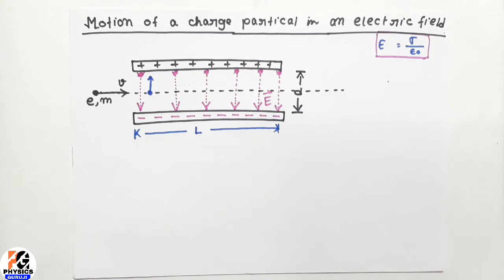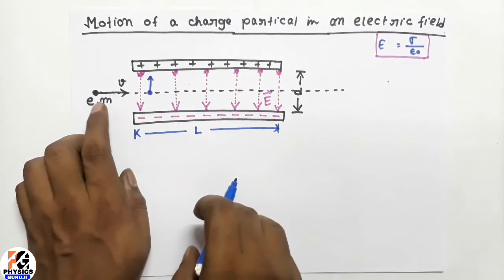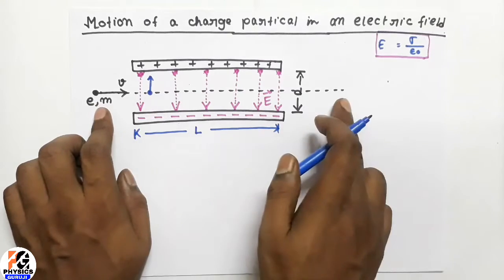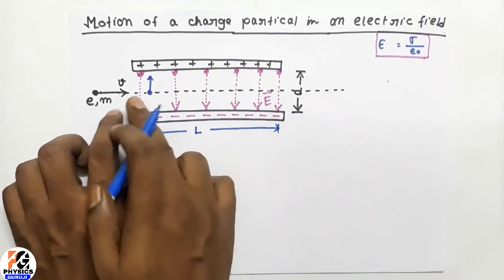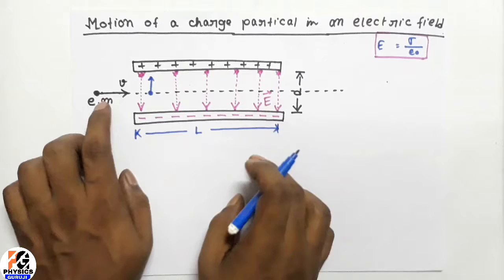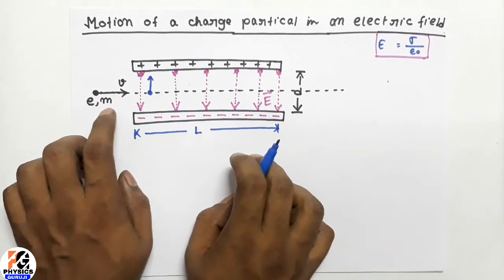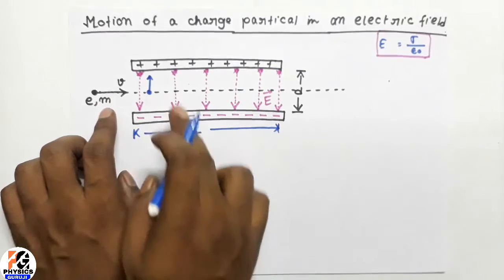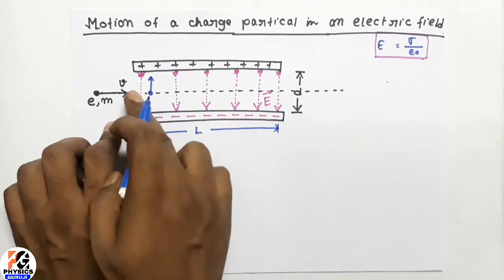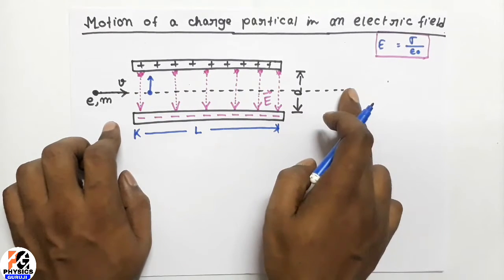Now here, if I throw an electron along this dotted line — that is, along the middle portion of the two plates — with a velocity V, then without these plates, the path would be a straight line.